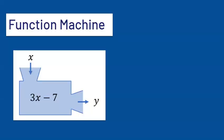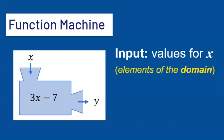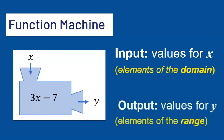I'm going to show you a sixth representation: the function machine. The function machine shows an expression inside, and that expression is our function. The input is represented by x, and the output is represented by y. Our input, or our values for x, we call the elements of the domain. The output, or the values for y, we call those the elements of the range.